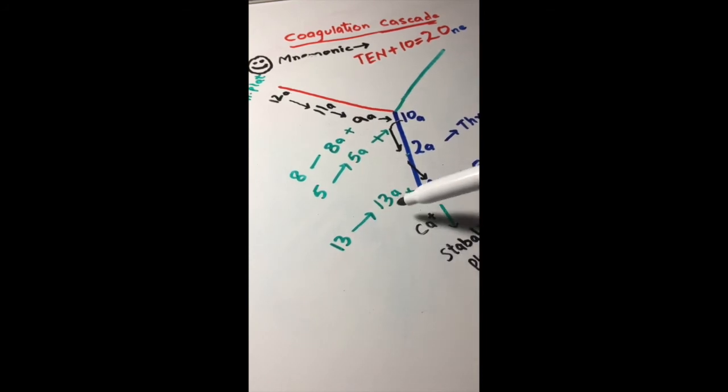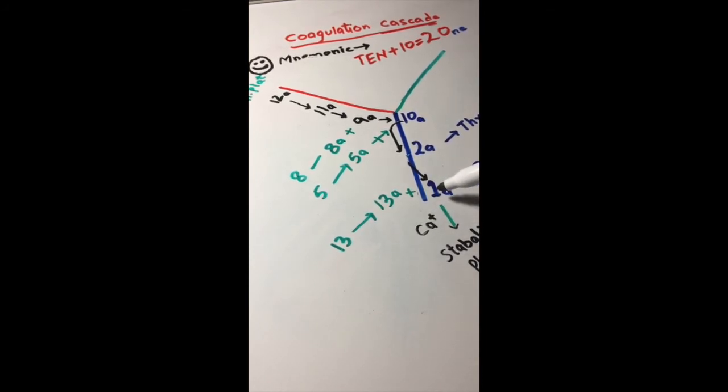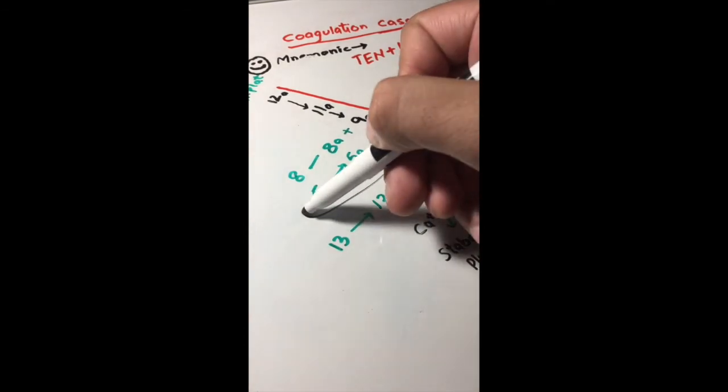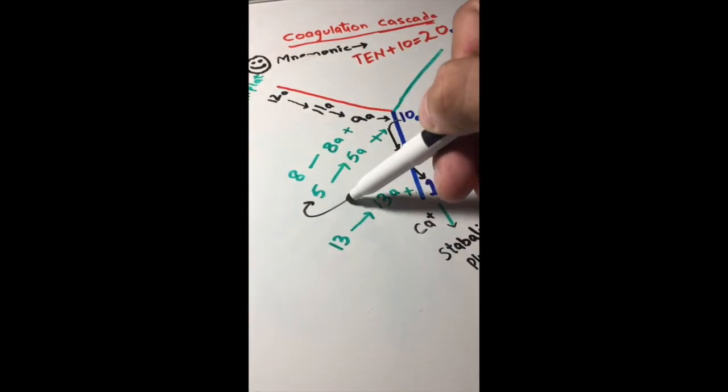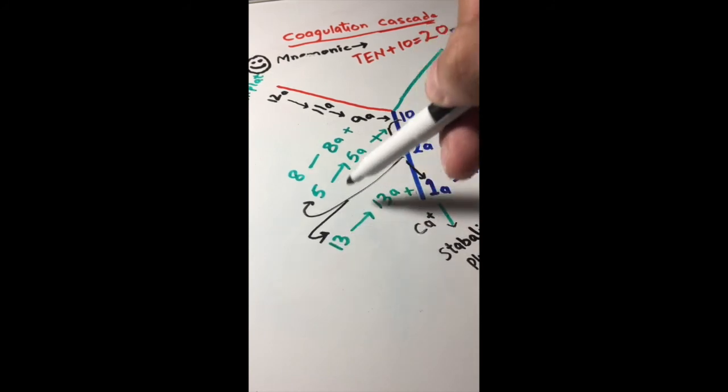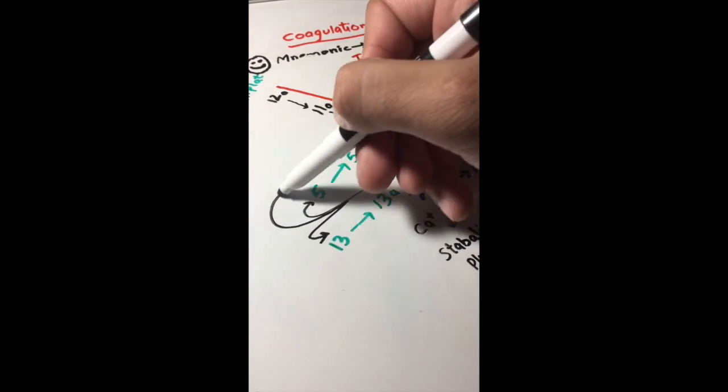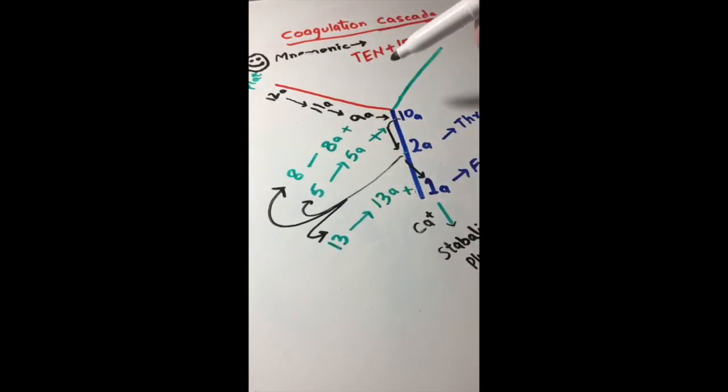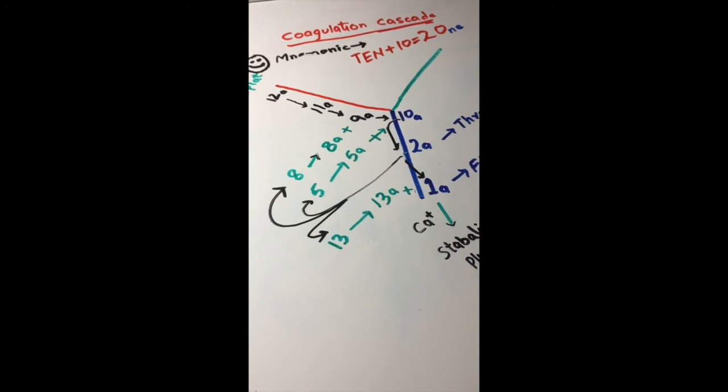13 gets activated into 13a and goes with 1. They are activated by factor 2. We didn't give factor 2 anything—we gave 9 something, we gave 10 something, we gave 1 something. So factor 2 says, 'You didn't give me anything? I'll take all of you.' And it helps them activate into their active state.